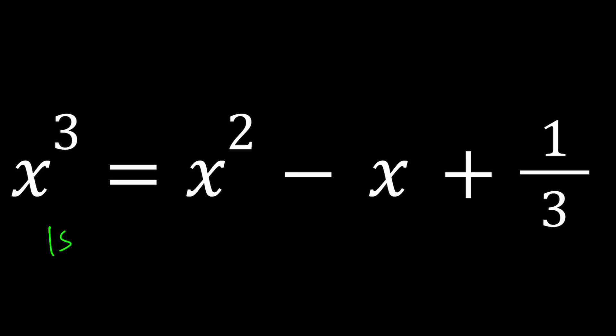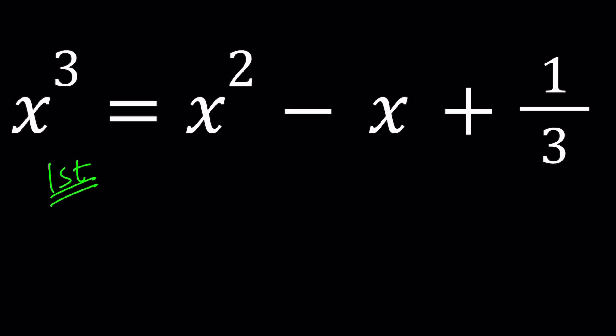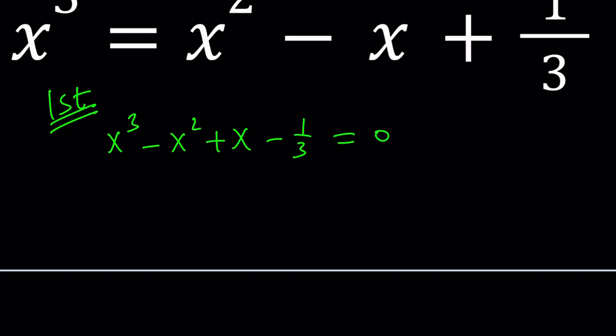My first method is going to involve the cubic formula. To be able to use the cubic formula, we would like to put everything on the same side first. And then I want to replace x with something else so that I can get rid of the quadratic term. So the idea is to depress the cubic.